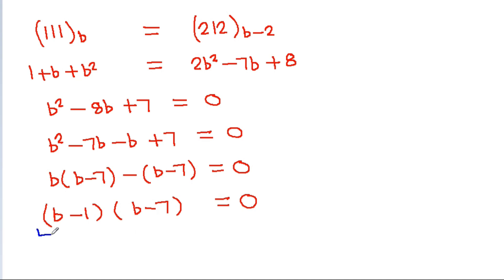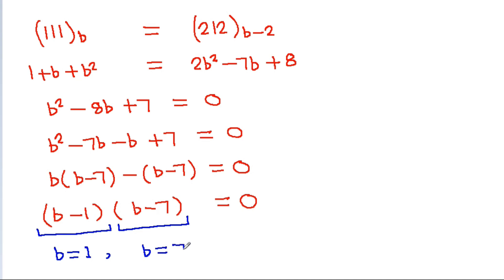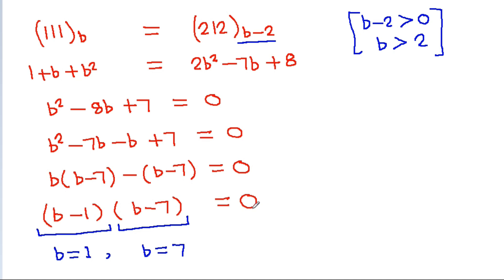If b minus 1 equals 0 then b equals 1, and if b minus 7 equals 0 then b equals 7. Since base b-2 must be positive, b must be greater than 2, so b cannot equal 1. Therefore b equals 7.